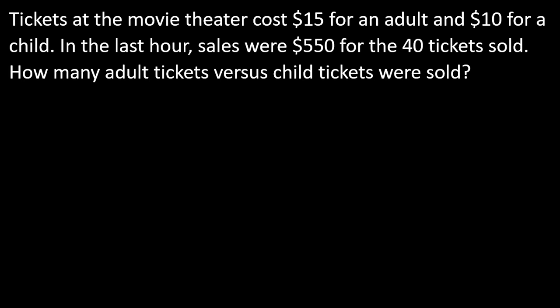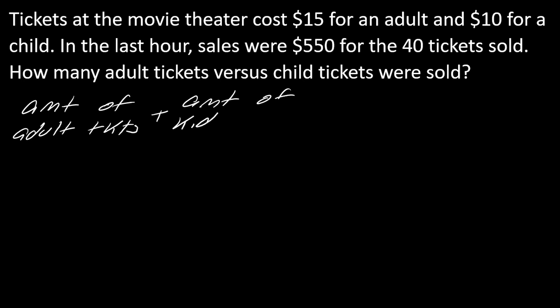For this last one: tickets at a movie theater cost $15 for an adult and $10 for a child. In the last hour, sales are $550 for the 40 tickets sold. How many adult tickets versus child tickets were sold? This is actually very similar in reasoning to the last one. I want you to see if you can set this one up. First, find the equal sign — pause and hit play when you're ready. So I have the amount of adult tickets plus the amount of kid tickets, and that comes out to $550. Now incorporate the $15, $10, and 40 — see if you can continue.